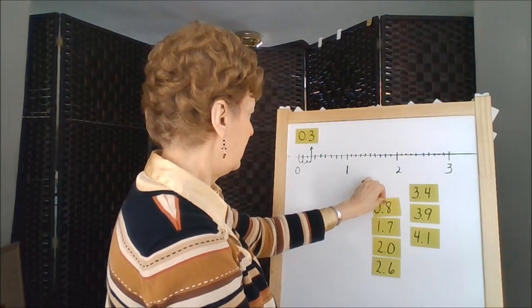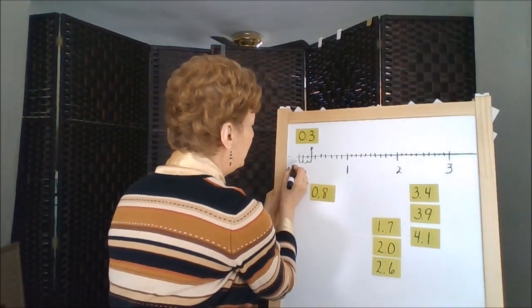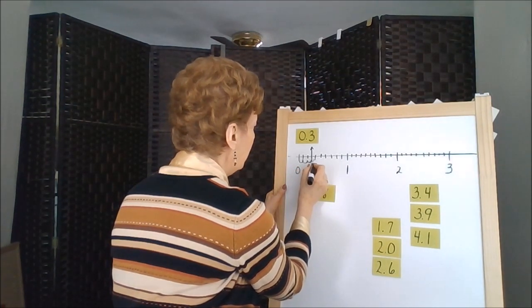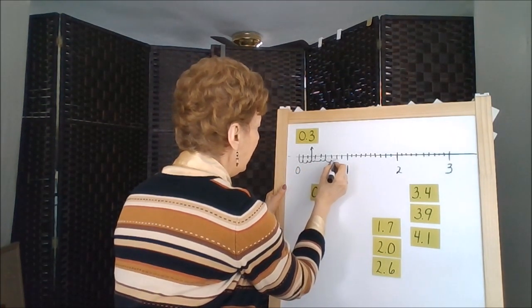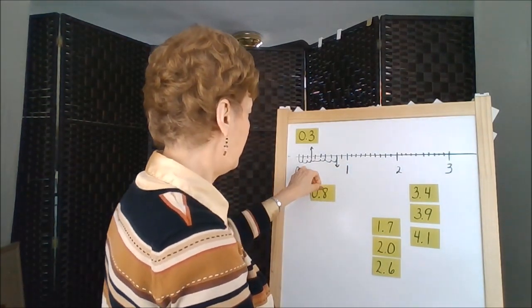0.8. We would go eight jumps this time. One, two, three, four, five, six, seven, eight, and this would be the placement of the 0.08.